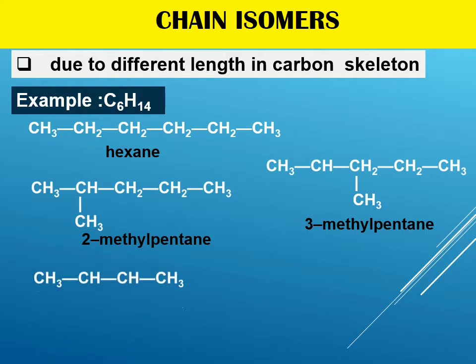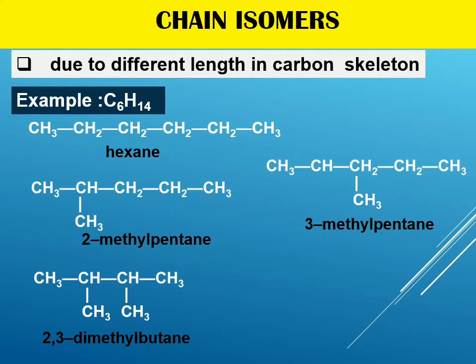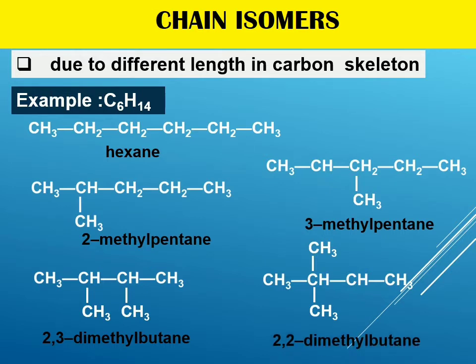I can also draw a 4-carbon chain with 2 alkyl groups as branches, placing them on the second and third carbons — that is 2,3-dimethylbutane. Or drawing a 4-carbon chain with the branch on the second carbon only gives 2,2-dimethylbutane. So in total, there are 5 chain isomers for C6H14: hexane (6-carbon chain), the methylpentanes (5-carbon chain), and the dimethylbutanes (4-carbon chain).